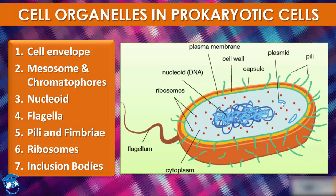In higher classes you will learn that plasmid DNA, which is extrachromosomal in nature, is used to monitor bacterial transformation with foreign DNA. The nuclear membrane is found in eukaryotes but not in prokaryotes. No organelles like those in eukaryotes are found in prokaryotic cells, except for ribosomes.